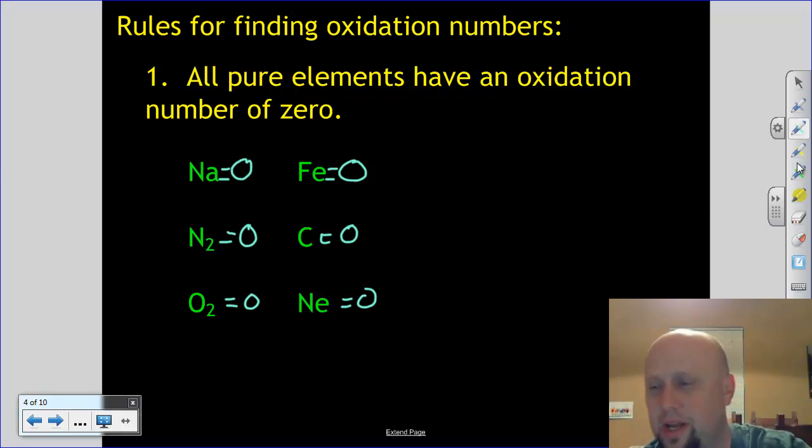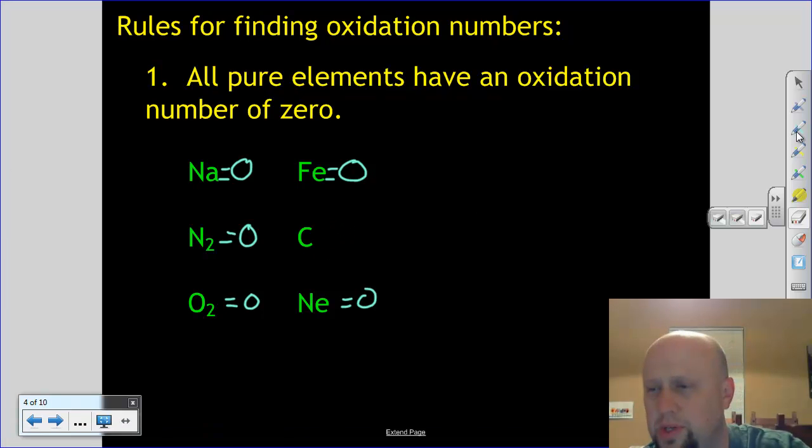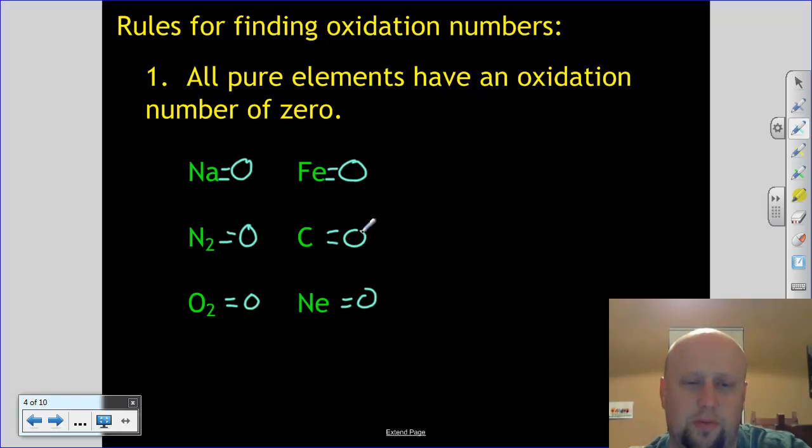I'll tell you what, guys. On the test every year, there's only a couple oxidation number questions, but every year, I get someone fooled because one of the first things I ask for an oxidation number for every year is right here, N2. It's a pure element. It's by itself. It's oxidation number zero. No trick to it, but every year someone forgets that and just misses that. So that's rule number one. So not too bad so far.